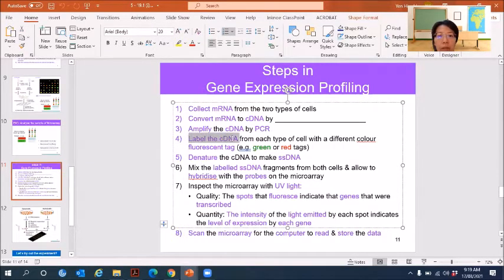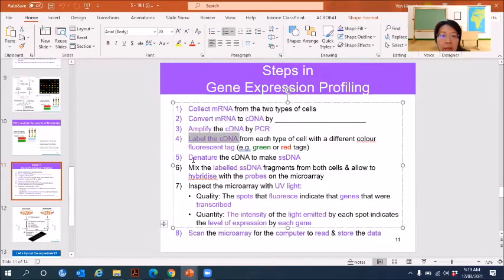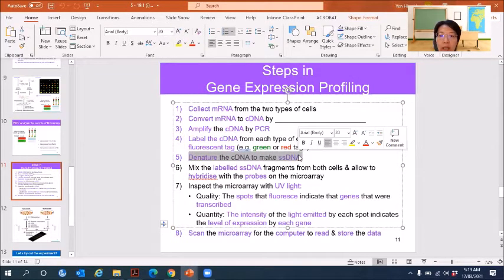After that, you need to label the cDNA using different color fluorescent tags. So you can use fluorescent tags. And then denature the cDNA to make single-stranded DNA.